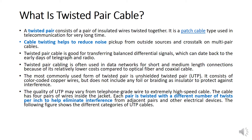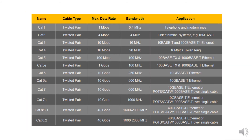Here is the Cat 6 cable — cable type, data rate, bandwidth, and application table. This table gives you guidance depending on the project and what type of cable you are using. UTP may vary from telephone grade wire to extremely high speed cable; the cable has four pairs of wires inside the jacket, each pair twisted with a different number of twists per end to help eliminate interference.